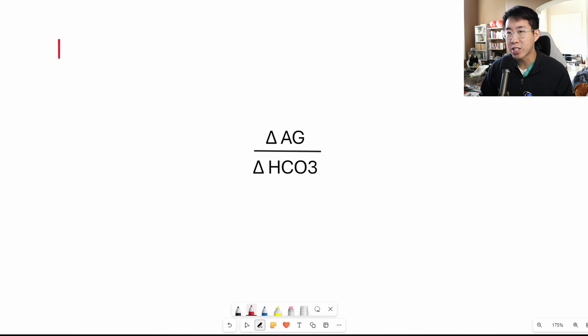The Delta Delta is used when you have a patient with a high anion gap metabolic acidosis and you want to assess whether or not they have an additional non-anion gap metabolic acidosis or an additional metabolic alkalosis.